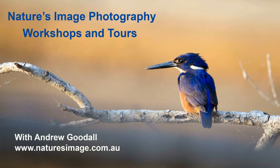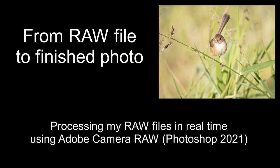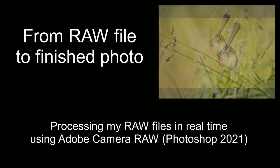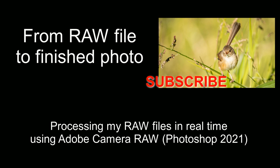G'day friends, it's Andrew here from Nature's Image Photography with the first in a new series of videos about processing my RAW files from start to finish in real time. I'll be using Adobe Camera Raw in Photoshop, as I do for all my photos, and because this is the first time I've had to edit and talk at the same time, I'm going to start with something fairly simple — this nice little shot of a female red-backed fairy wren.